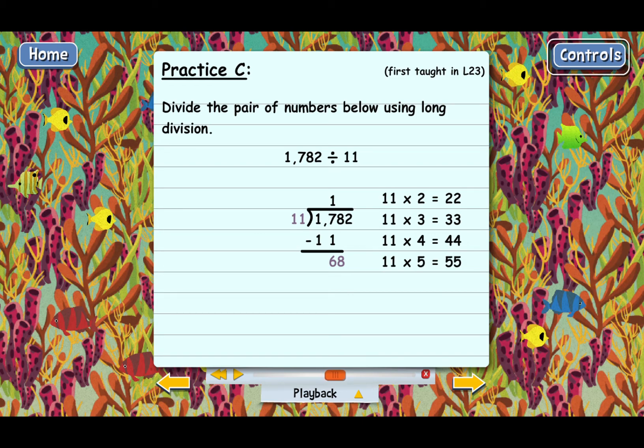Do you see the pattern? The answer is always just whatever you multiply 11 by twice. You just take that number and put it twice. 2 becomes 22, 3 becomes 33, and so 11 times 6 has to be 66.